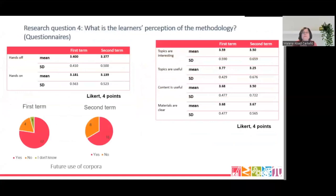To answer question four — the most interesting one in my opinion — three kinds of data were collected. First, the numeric data of the questionnaire: here we have the results of the Likert scale questions on a four-point scale for the DDL activities, hands-on and hands-off. Although this is positive for both modalities, perception is slightly better for hands-off in both terms. We also have the Likert scale results for the teaching units, showing very positive perception, although slightly worse in the second term. We can also see the answers to whether students would use corpora after the study — and sadly, in the second term there is an undeniable increase in negative answers, but it's still positive overall.